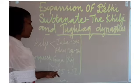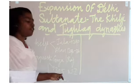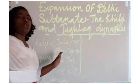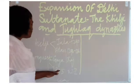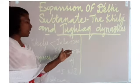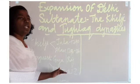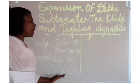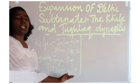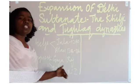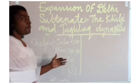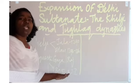By 1305, Alauddin Khalji became the master of North India. The whole of North India was conquered by him. After conquering North India including Rajasthan and Gujarat, he concentrated on the Deccan region. Alauddin Khalji was the first Turkish ruler who invaded as far as the Deccan.